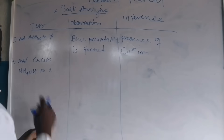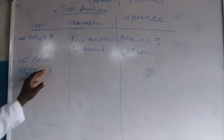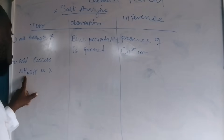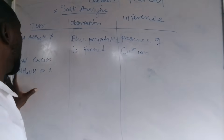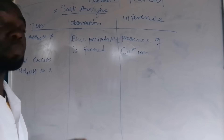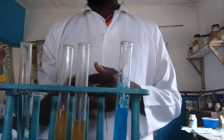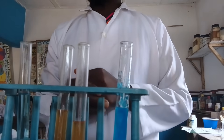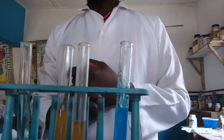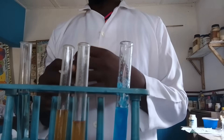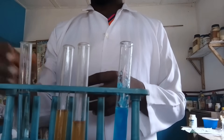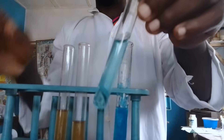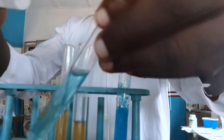Under number two, we add NH₄OH — ammonium hydroxide — to X. Let us carry out the practical. We are going to be adding ammonium hydroxide to copper sulfate and check the observation.